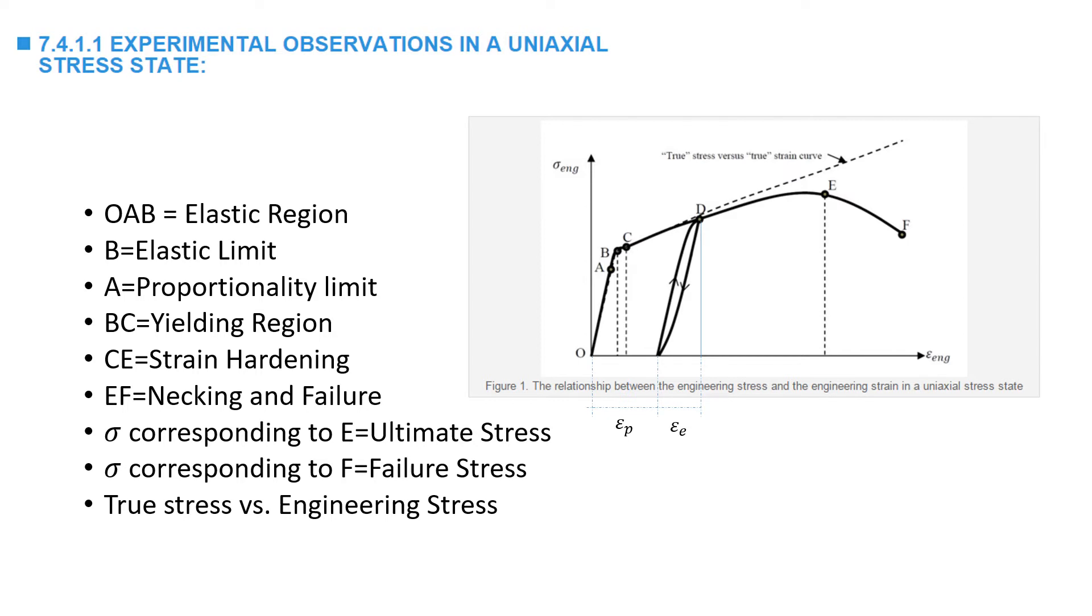Most metallic materials exhibit similar behaviors when it comes to the stress strain curves. The initial part is termed the elastic region. In this region, upon unloading, the specimen returns back to its original shape. The slope of this portion is equal to the Young's modulus. This region is mostly linear except for a small region of non-linearity that lies between the proportionality limit A and the elastic limit B.